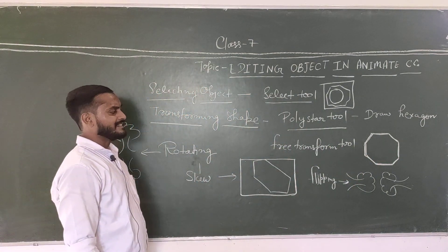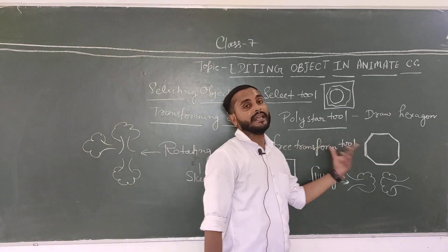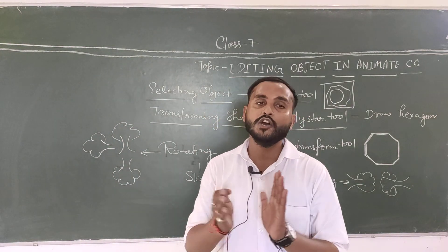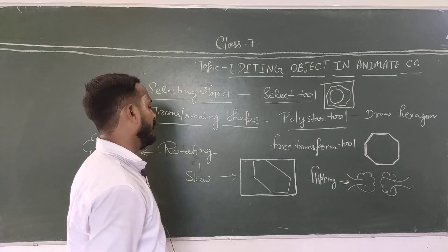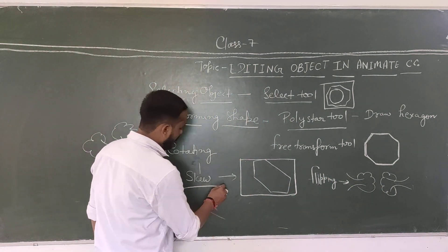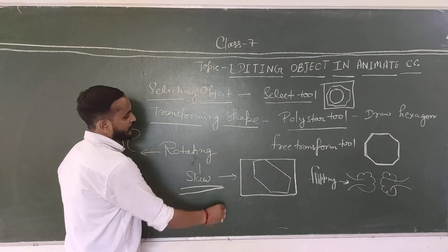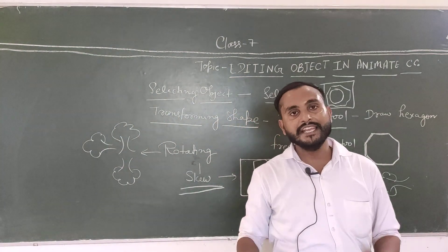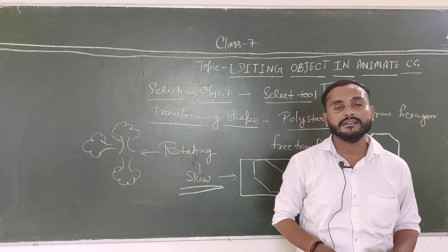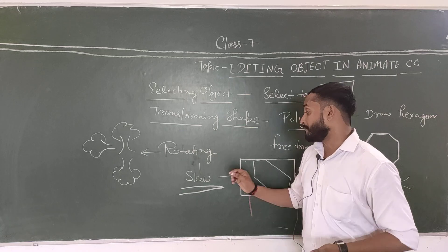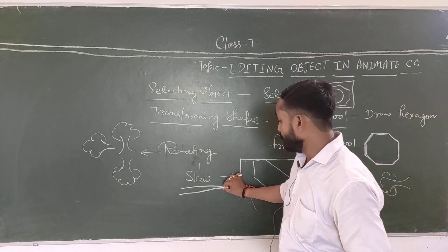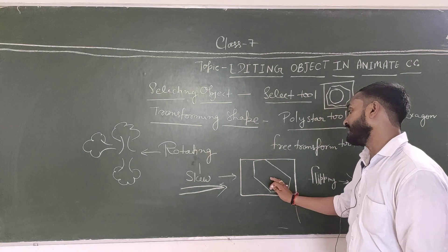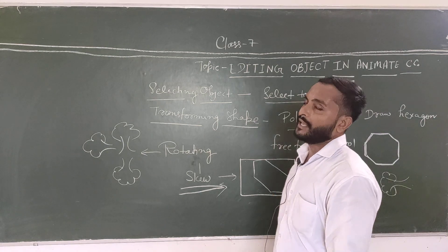अब हम उस shape को transform और skew कर सकते हैं। Skew का मतलब है — किसी object को किसी angle पर झुकाना, या दबाना। It means when you want to press or compress any image or object at an angle, that is called skew. अगर exam में आए कि what is skew, तो यह definition लिख सकते हो।